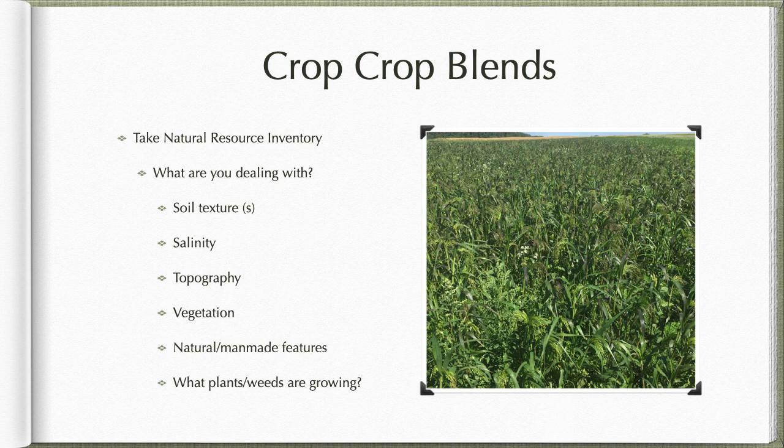Are we looking at some natural or man-made features? It may be a pocket of bush, or man-made features like having train tracks going through the field. One of the most important things I look at is what plants or weeds are growing there now, because that gives a really good indication of where we are in soil health, in the fungi-to-bacteria ratios, and what exactly is happening in that soil.